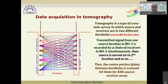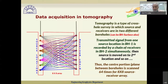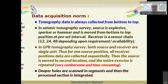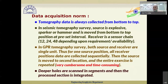This is a crosshole survey in which source and receivers are in two different boreholes. We can also have a borehole-surface combination. The transmitted signal from borehole one is picked up by receivers in borehole two, then the source moves to the next location and so on. In effect, for an 8×8 source-receiver array, the center portion is scanned 64 times. Tomography data is always collected from bottom to top. The source can be explosive, sparker, or hammer source, always moved at preset intervals. The receiver is a sensor chain of 12, 24, or 14 channels depending on requirements.